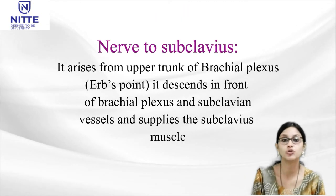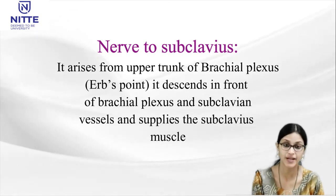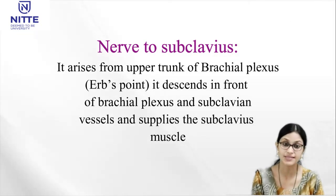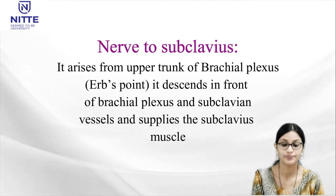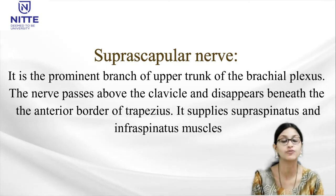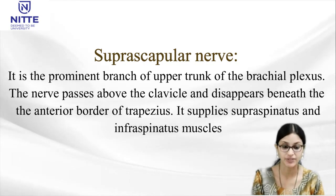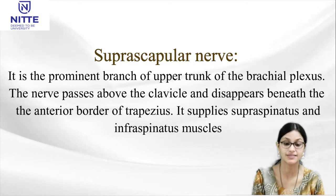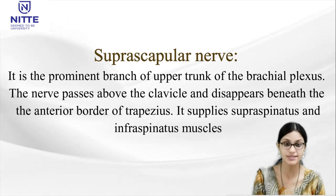The nerve to subclavius is a branch given by the upper trunk of brachial plexus at Erb's point. It descends in front of the brachial plexus and the subclavian vessels and supplies the subclavius muscle. The suprascapular nerve, a prominent branch of the upper trunk, passes above the clavicle and disappears beneath the anterior border of trapezius. It supplies the supraspinatus and infraspinatus muscles.